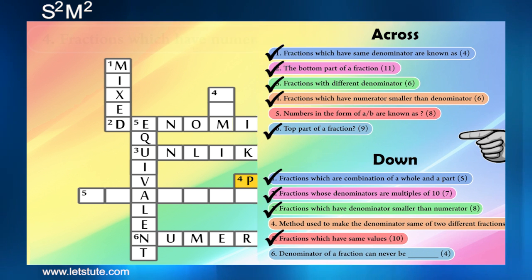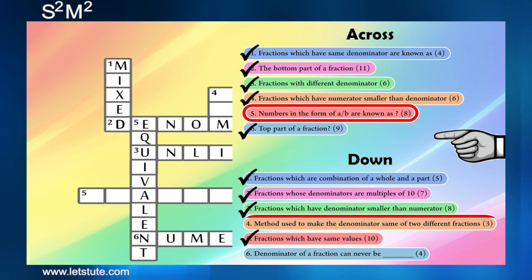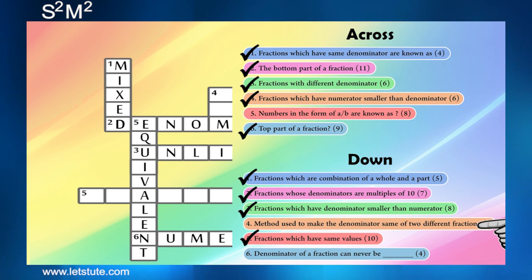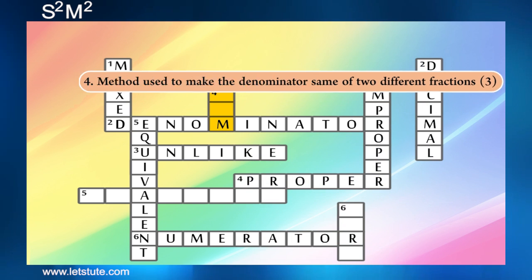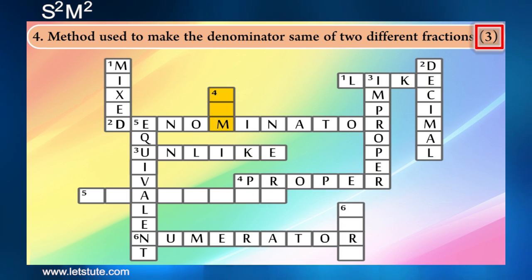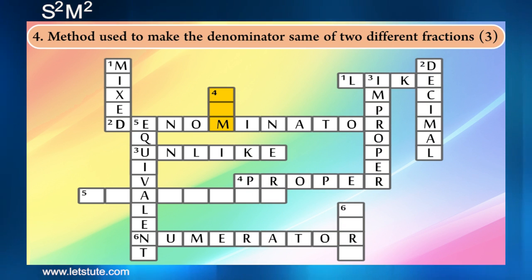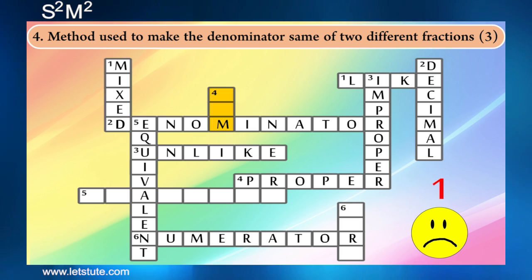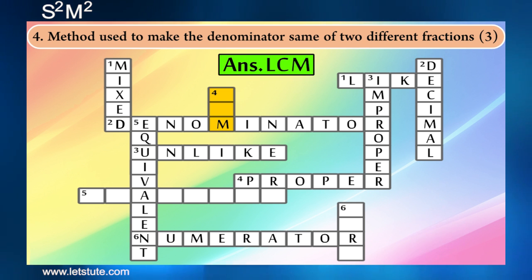Now we can see we have three questions left. Let's see what's the down for four. Method used to make the denominator the same for two different fractions. We all know it's a very well known method, and the answer is LCM.